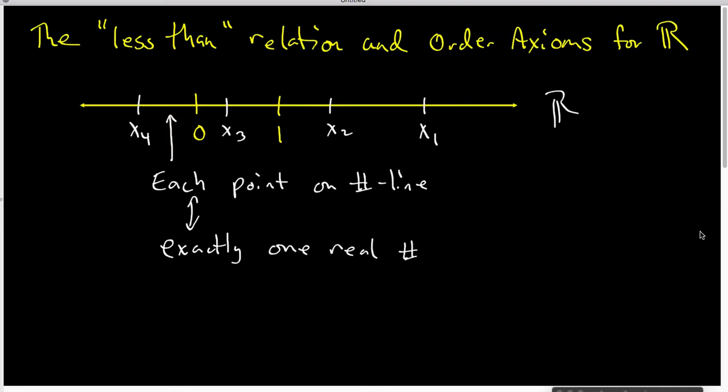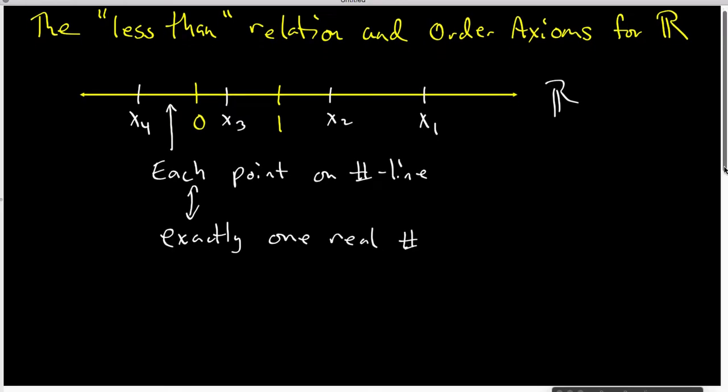But once we have the number line established, talking about less than is really easy. So let's draw another number line. Now in this particular case, I don't care where the zero is and I don't care where the one is. So I'm simply going to write down here is the real number A and here is the real number B.